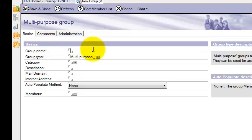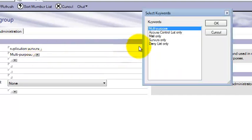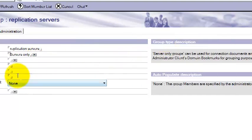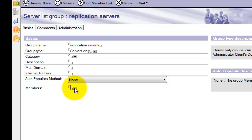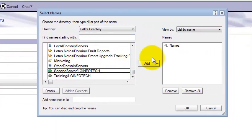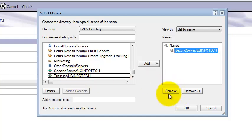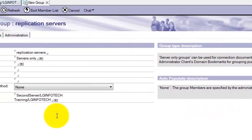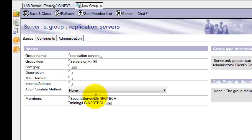Say add group - for example, replication servers. And type of group, select as servers only. Here I am selecting my servers here.